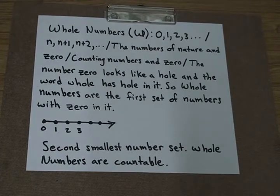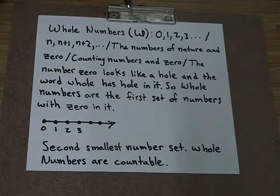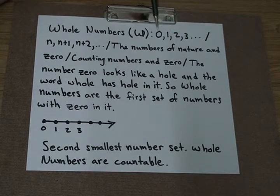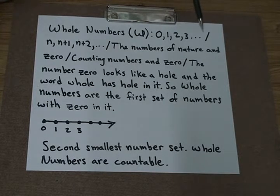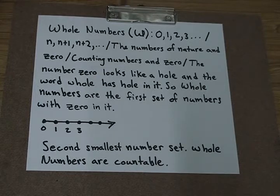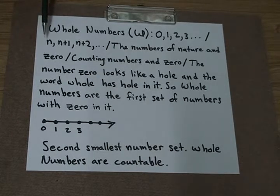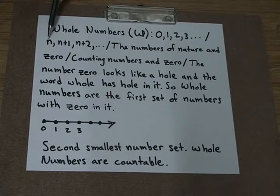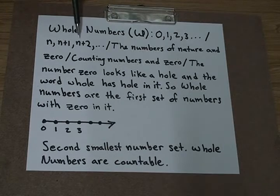The next biggest number set are the whole numbers. The symbol for the whole numbers is a bolded W, which can be drawn as a W with a line through either side of it. The examples of the whole numbers are 0, 1, 2, 3, and as far as we can count. The general form of these numbers looks like the same as the natural numbers, being n, n+1, n+2. It goes in order. So whatever number we pick for n, the next successive number would be by adding 1 to it, then 2, then 3.